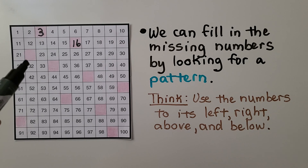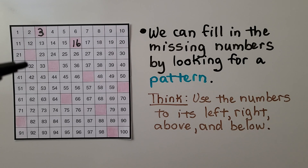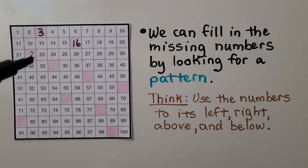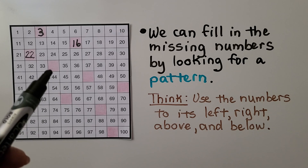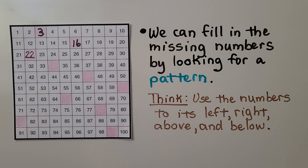Here we have another missing number. Look at the numbers to the left and to the right, and above and below. See the pattern? This has no 10s, there's one 10 — how many 10s would this one have? Then it goes 3 tens, 4 tens, 5 tens, 6 tens, and they all have a 2 in the 1s place. It must have a 2 in the 1s place and a 2 in the 10s place — it's 22. The next missing number is 31, 32, 33 — if you said 34, you're right.